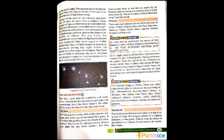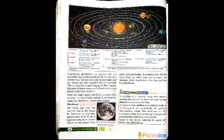The Earth is the third nearest planet to the sun and the fifth largest planet. It is slightly flattened at the poles and bulging in the middle, which is why its shape is described as a geoid, meaning an Earth-like shape. Conditions favourable to support life are probably found only on Earth. The Earth is neither too hot nor too cold, and it has water and air which are very essential for our survival.